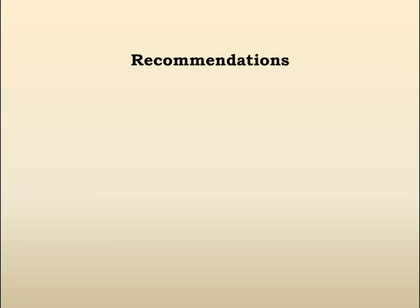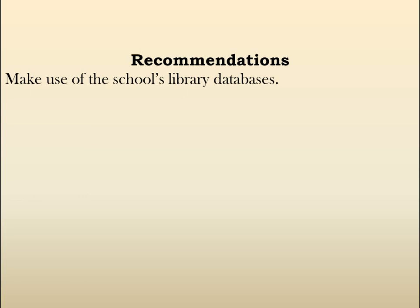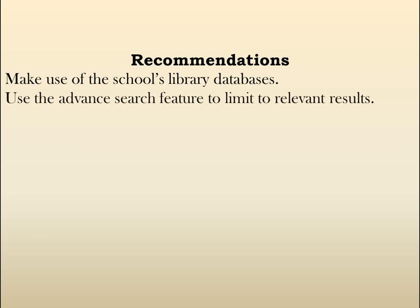Here are some recommendations to make finding an article much smoother. First, make use of the school library databases. Students who try to use Google end up taking three or four times longer. Use the advanced search feature to limit results — identify that you want an article published after 1970, and set a page minimum. I would suggest searching for articles that are at least 13 or 14 pages, and a good range for this essay is 15 to 20 pages, which gives you a good amount of material to work with.